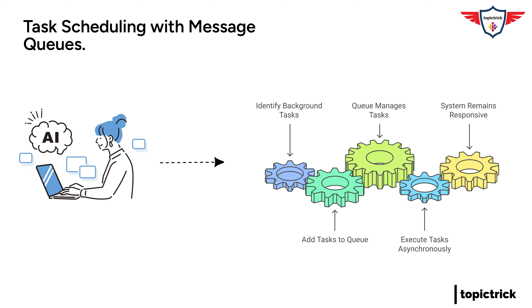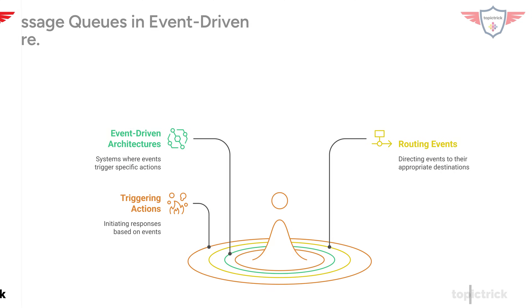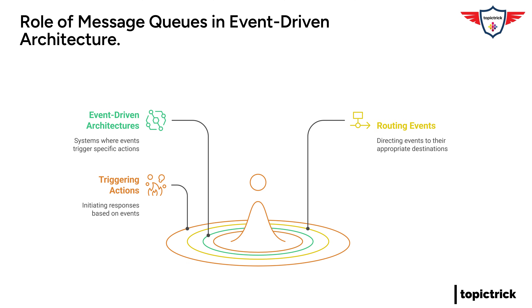Event-driven architectures are another great example. In these systems, actions or events trigger specific responses, and message queues are crucial for routing these events and triggering the appropriate actions. Think of it as a notification system in the restaurant that alerts servers when a table is ready or a dish is prepared. Message queues are like the silent but efficient coordinators ensuring everything runs smoothly without any hiccups.